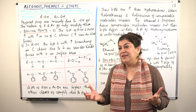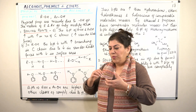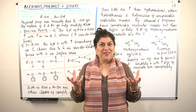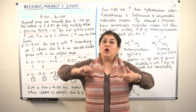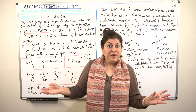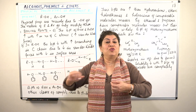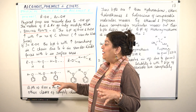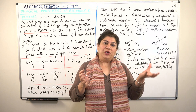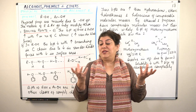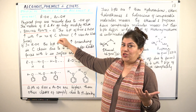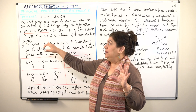How does this affect the physical properties? Whenever the molecules of a substance are attracted strongly, it is going to affect its boiling point. Boiling is where you want to move the molecules away from each other. Van der Waals forces are already there, but in addition, the hydrogen bond also prevents the molecules from moving apart. So alcohols and phenols will have a higher boiling point compared to other hydrocarbons of similar molecular masses.